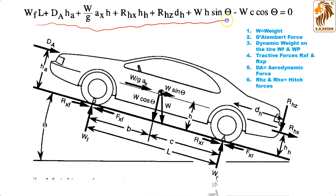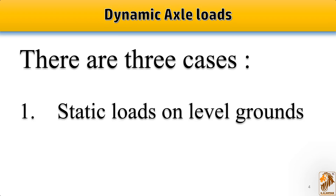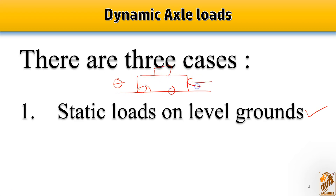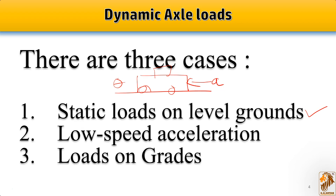Now let's come to the three cases considered for dynamic axle loads. The first case is static loads on level ground — the vehicle is at zero degrees theta. The second is low speed acceleration, where some acceleration is given to the vehicle. The third is load on the grade, where the road is at some angle theta and the vehicle is moving in that direction.